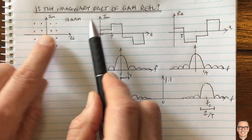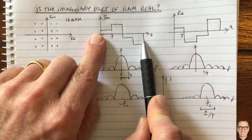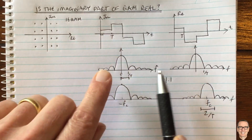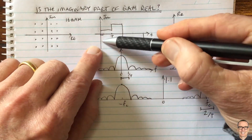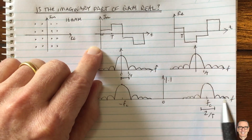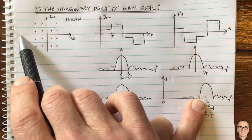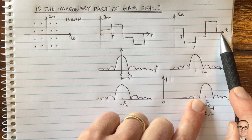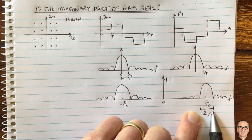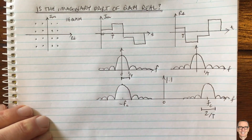So for QAM, the imaginary component is indeed a real signal. It's these amplitudes multiplied by the sine wave — when you multiply by the sine wave you get a real signal, an actual signal at the carrier frequency. You can send it through the channel at the same time as you're sending the real component, which is the waveform multiplied by a cosine wave at that high carrier frequency, because you're using twice the bandwidth.